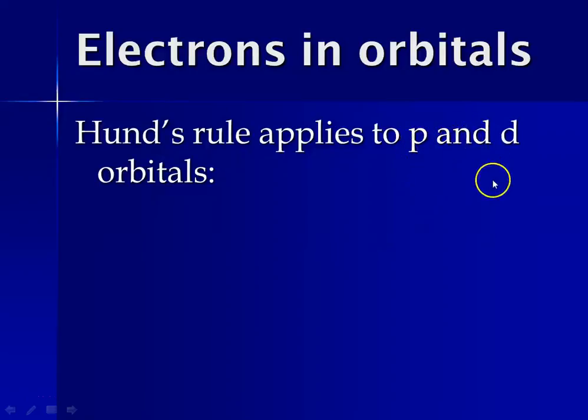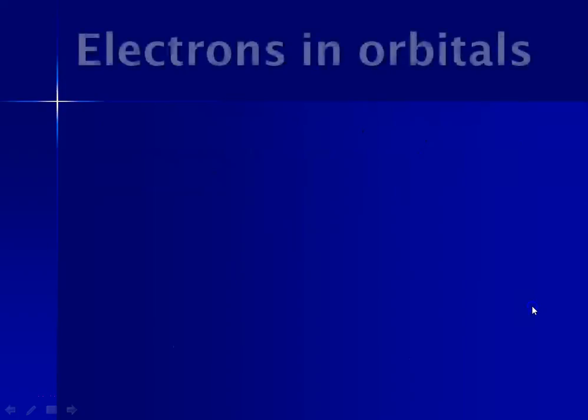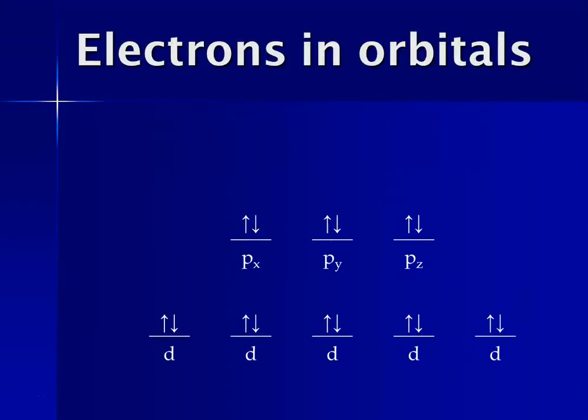So what does that look like? Hund's rule applies to p and d orbitals. So here I'm showing you three p orbitals and five d orbitals, and you'll see that the electrons will fill in with one in each orbital rather than pairing up. The same goes for the d. You would have five electrons, for instance. You couldn't put them here, here, and here. They're going to be all spread apart, and they're not going to pair up in the same orbital until they're forced to, and then eventually they will pair up.